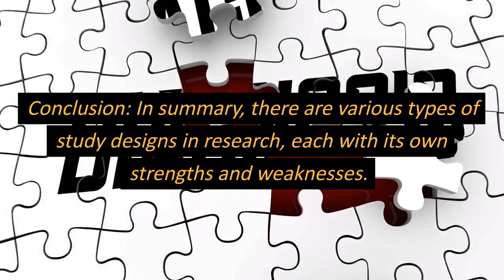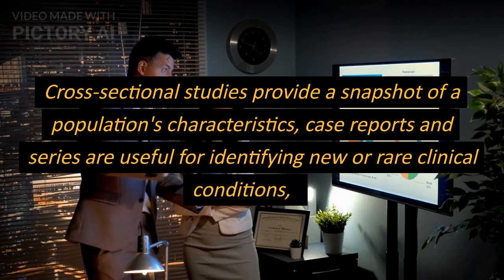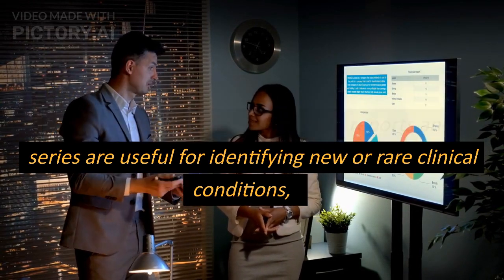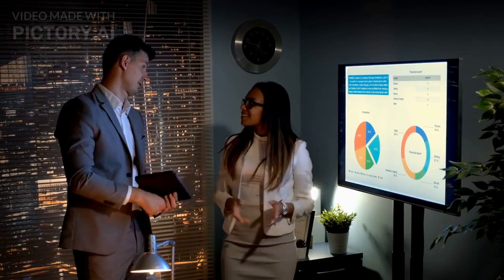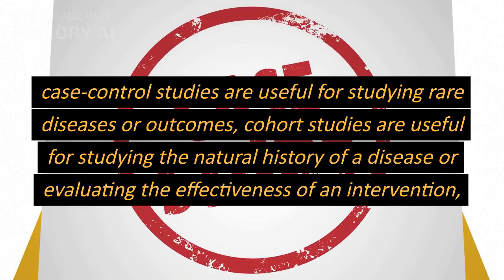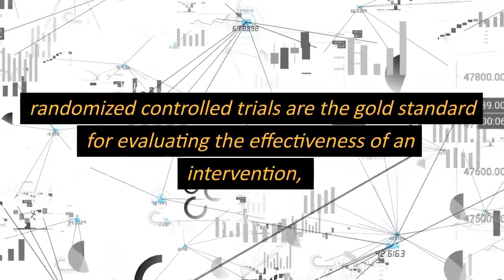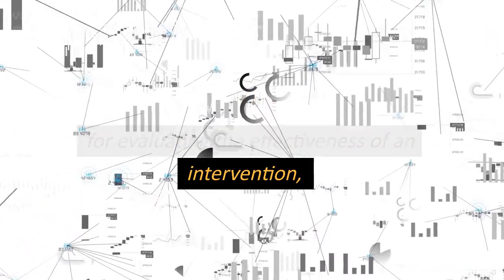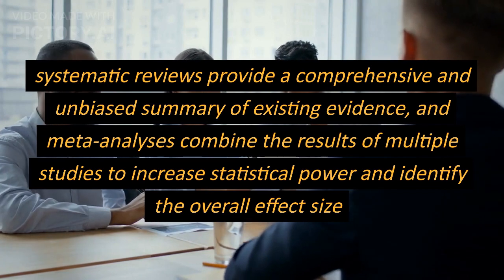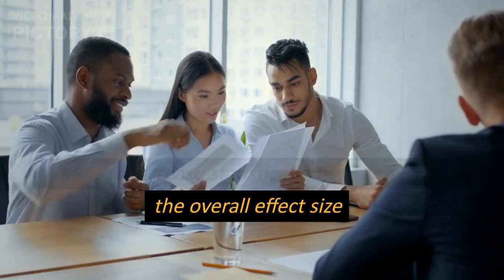Conclusion. In summary, there are various types of study designs in research, each with its own strengths and weaknesses. Cross-sectional studies provide a snapshot of a population's characteristics. Case reports and series are useful for identifying new or rare clinical conditions. Case control studies are useful for studying rare diseases or outcomes. Cohort studies are useful for studying the natural history of a disease or evaluating the effectiveness of an intervention. Randomized control trials are the gold standard for evaluating the effectiveness of an intervention. Systematic reviews provide a comprehensive and unbiased summary of existing evidence, and meta-analyses combine the results of multiple studies to increase statistical power and identify the overall effect size.